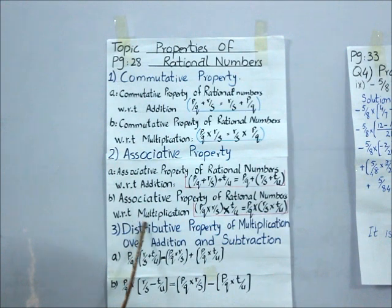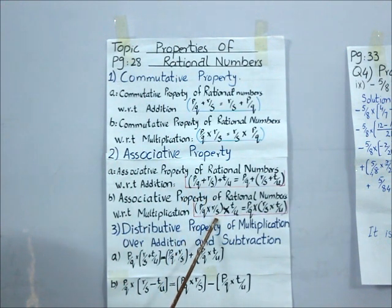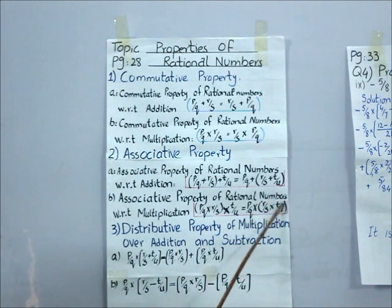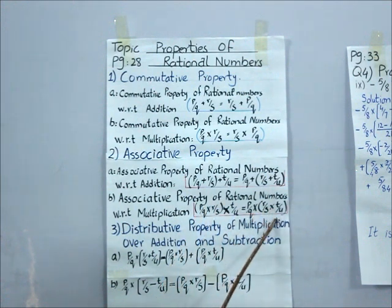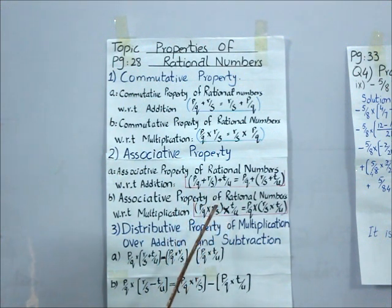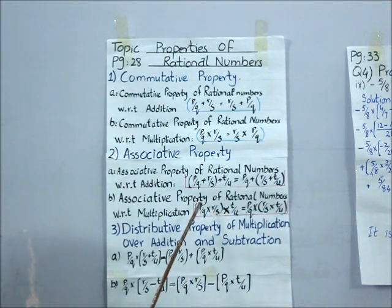The second type is the associative property of rational numbers with respect to multiplication. As I said, in associative property we always have three terms with the same sign between them. Here P by Q is multiplied by R by S, with the first two terms in a bracket on the left, while on the right-hand side R by S and T by U are taken in a bracket. If the order is changed, the answer cannot be affected.